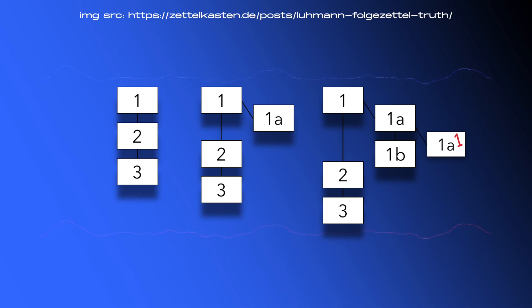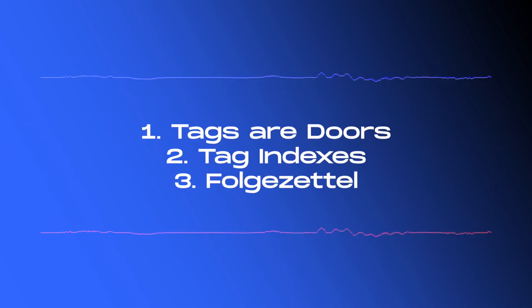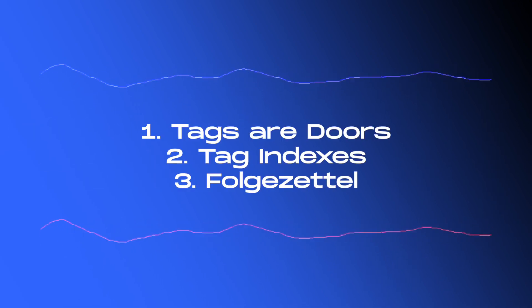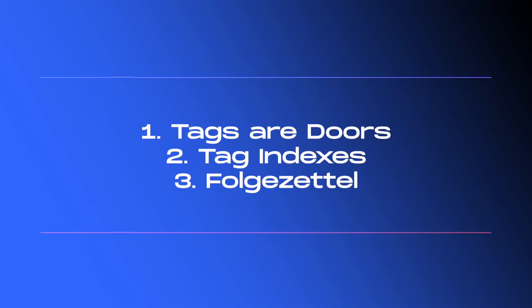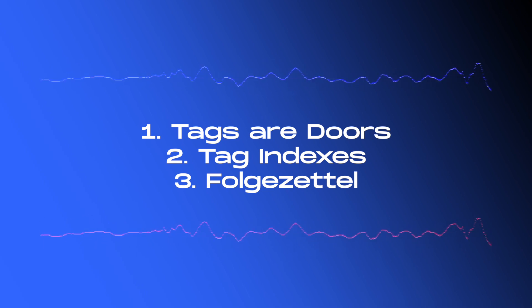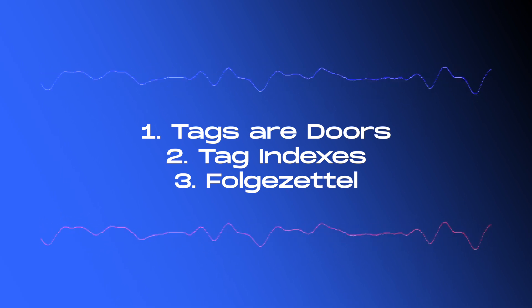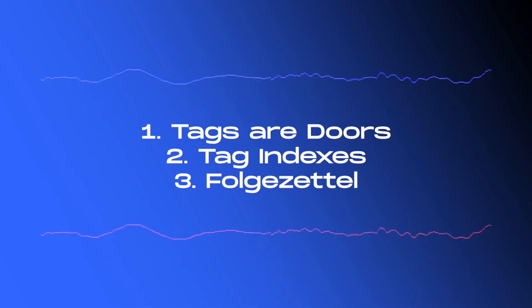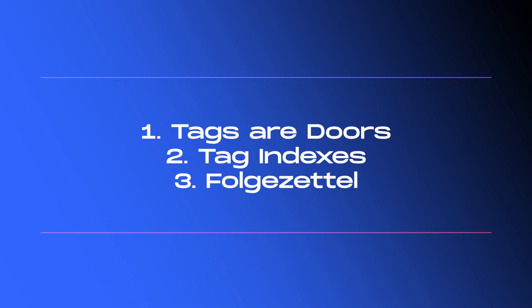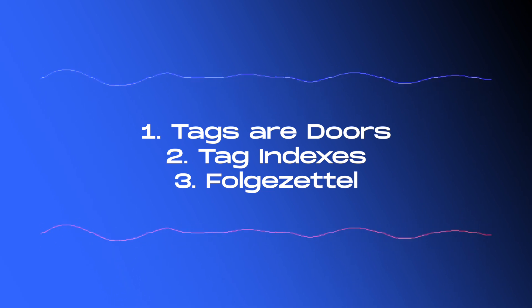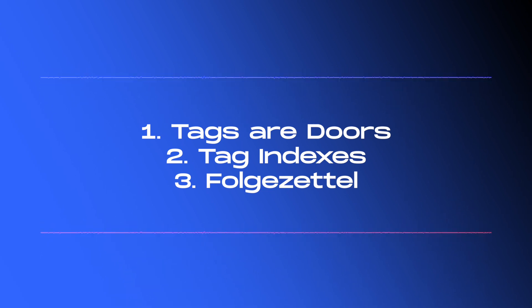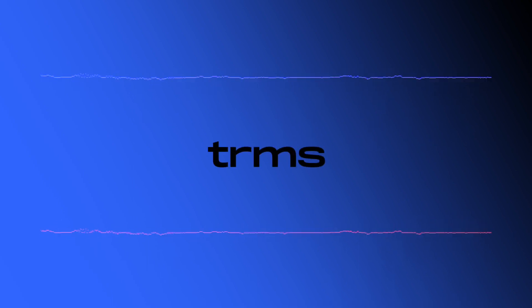These are folgezettel, and they are a structure you can use in your system. So those are three things to consider which I didn't talk about in my previous video. One: tags are doors, not corridors. Two: you can and should have an index of all your tags. And lastly: folgezettel are another way through which you can link notes together. See you next time.